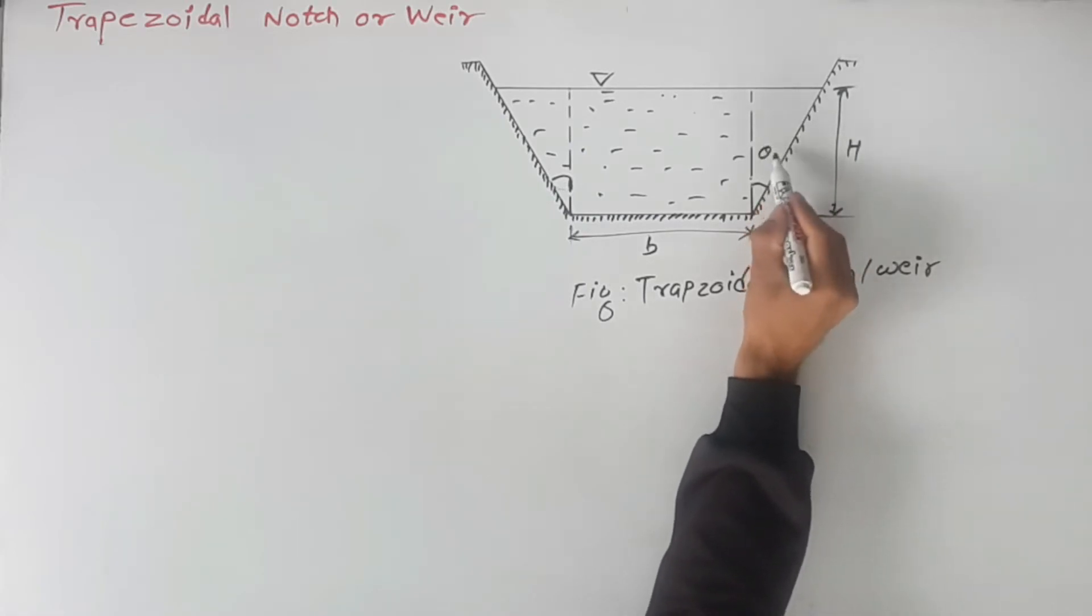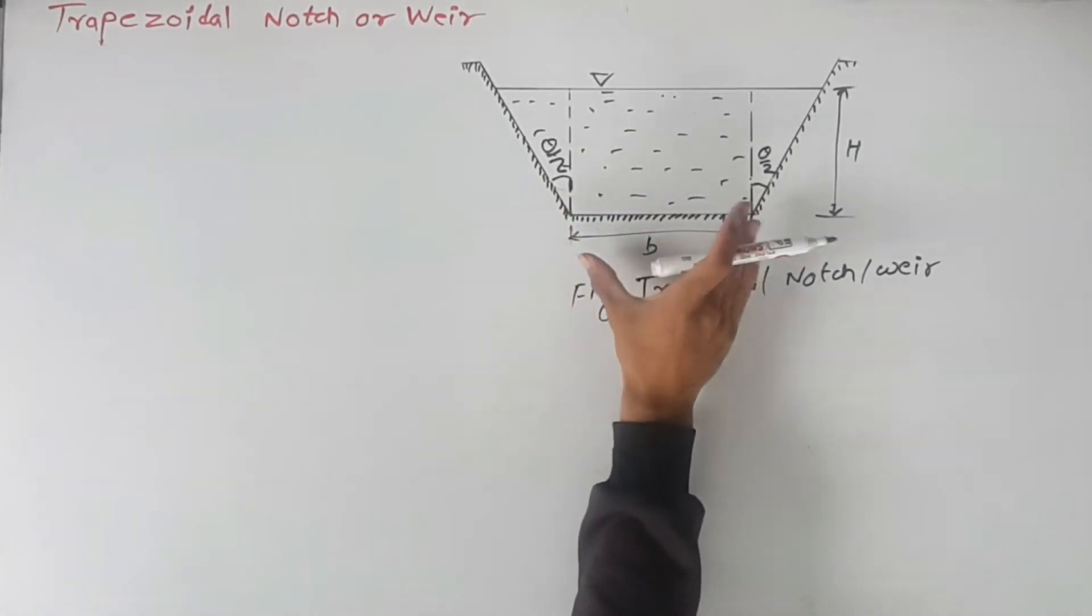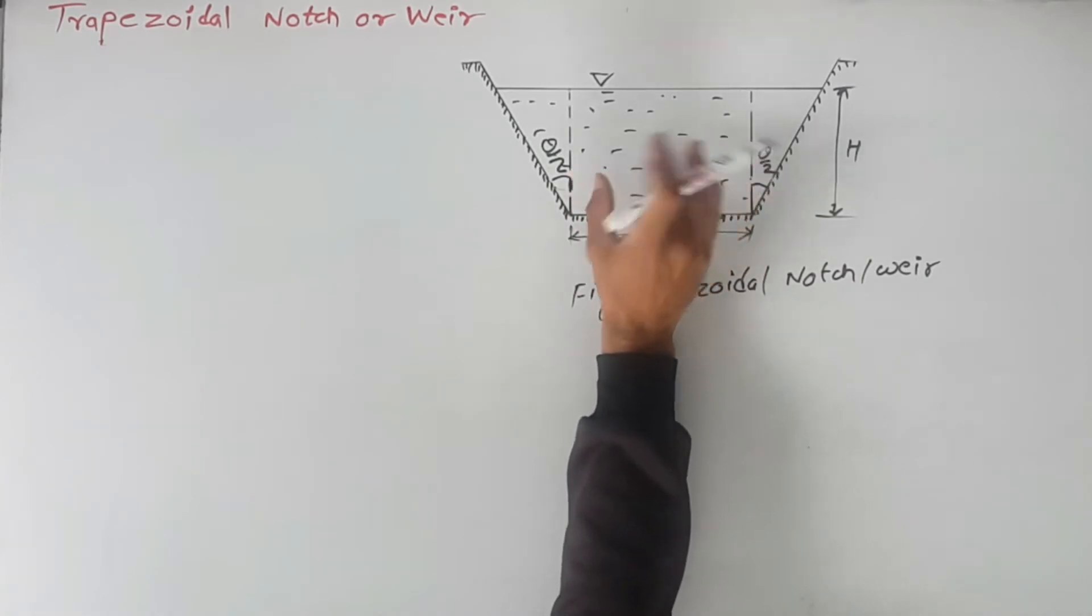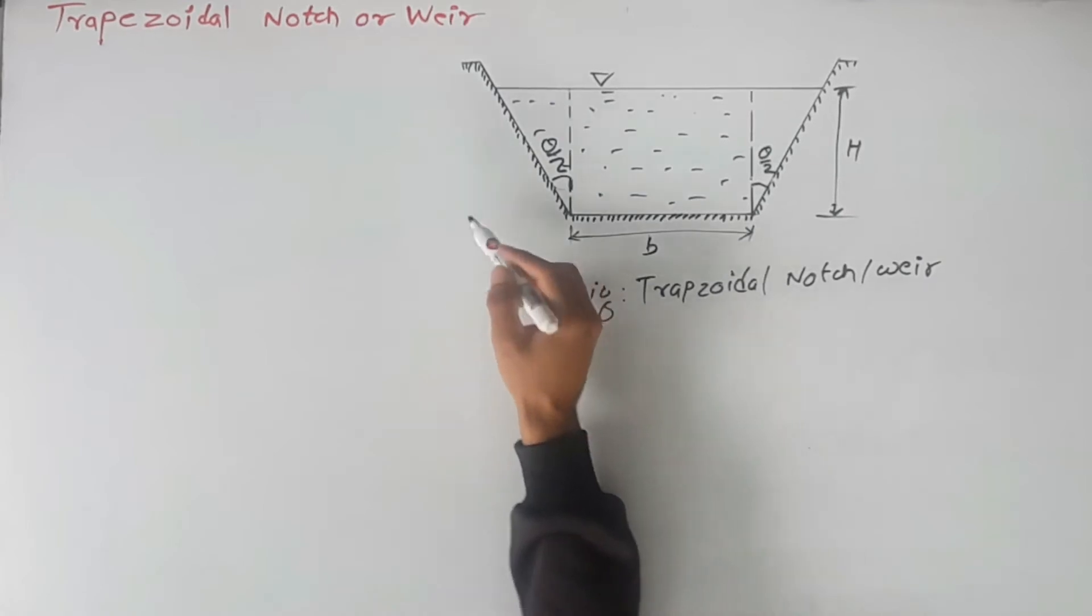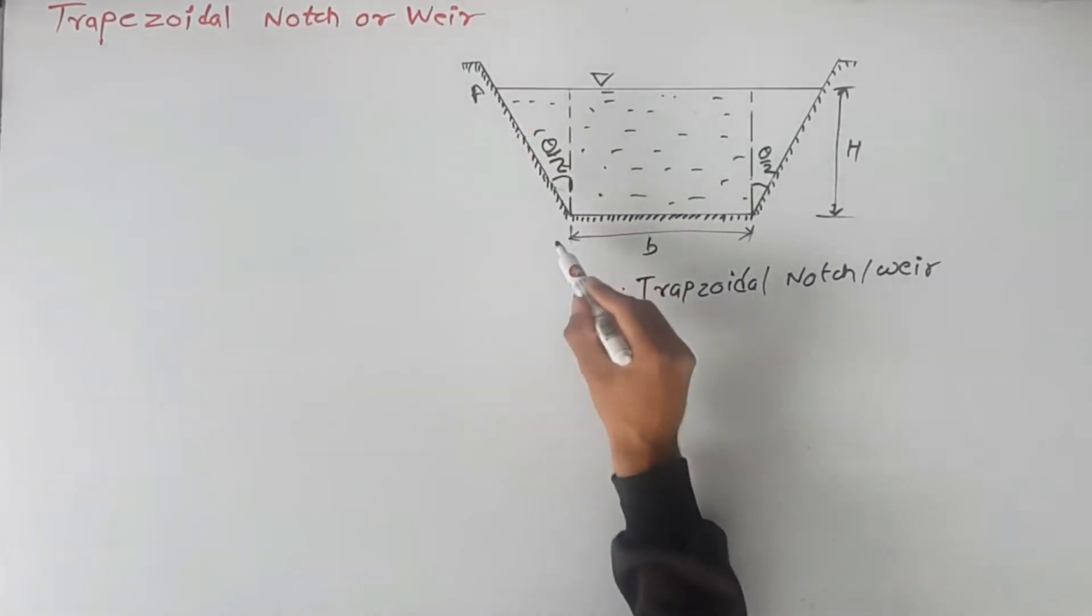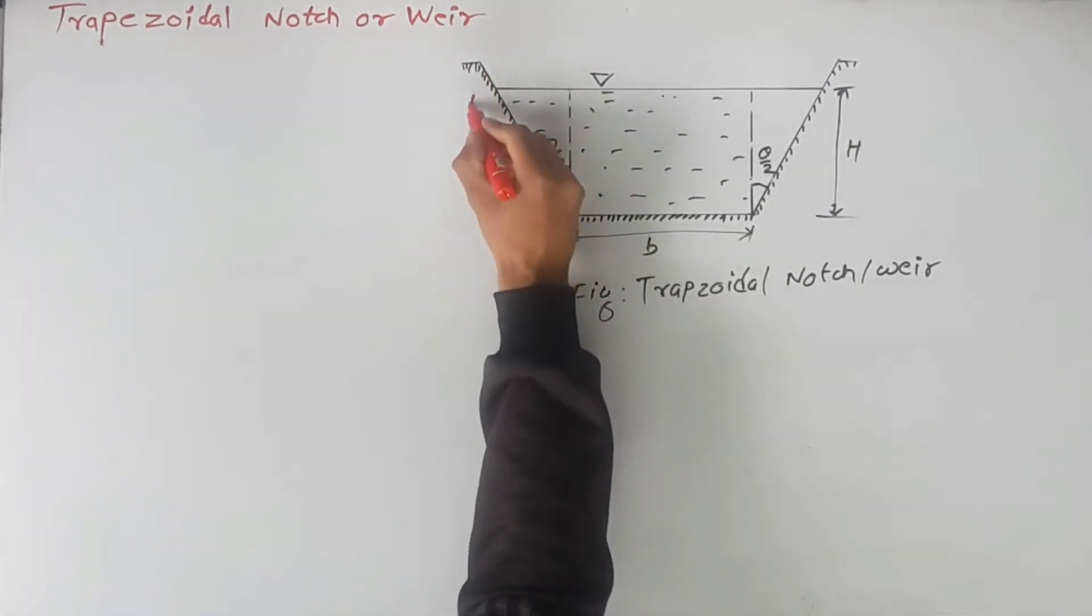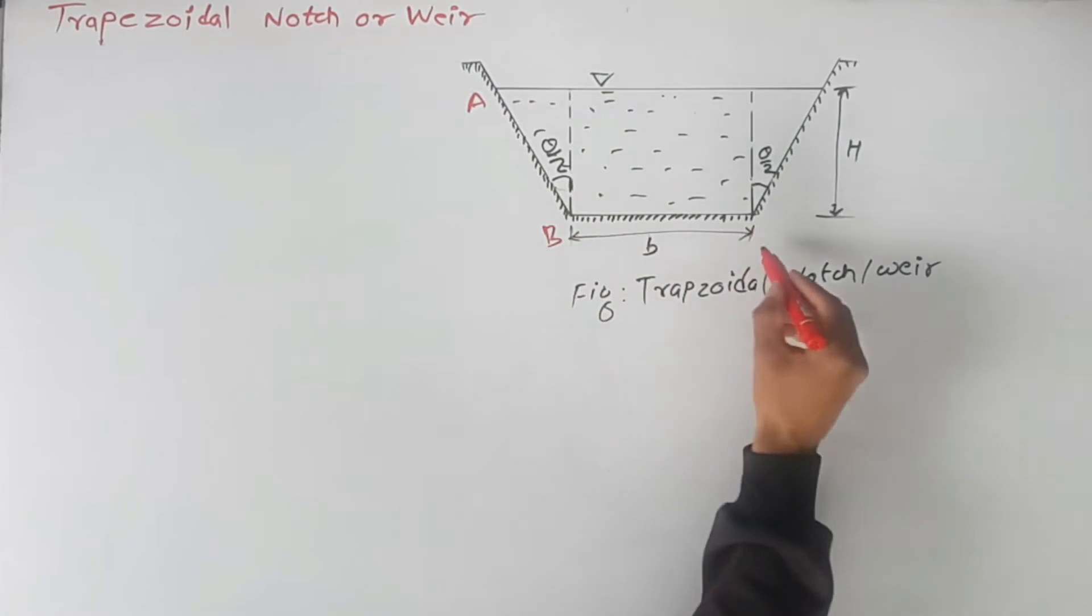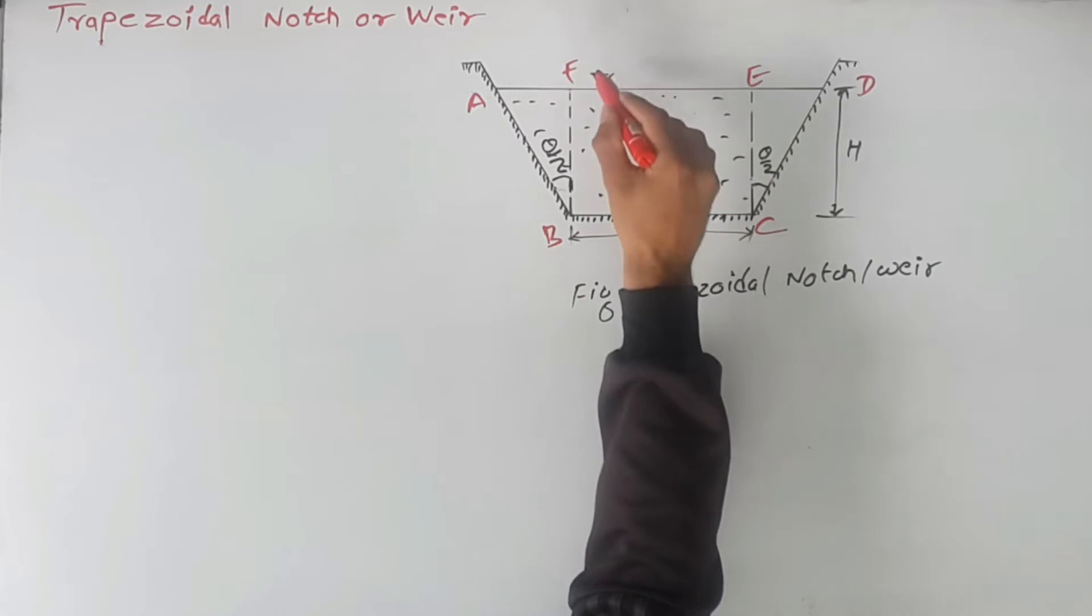Let this angle be theta by 2. This angle will also be theta by 2. We can see here, the figure is composed of one rectangle and two triangles. Let me give the names first here: A, B, C, D, E, F.